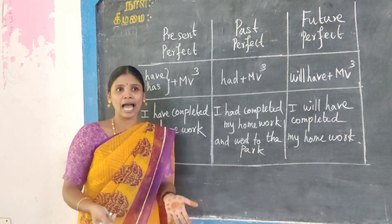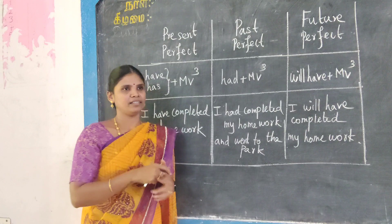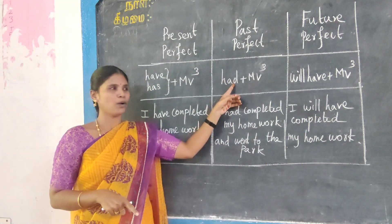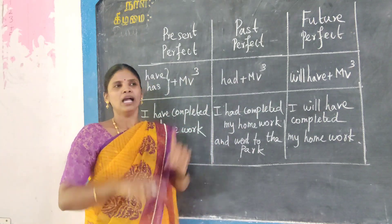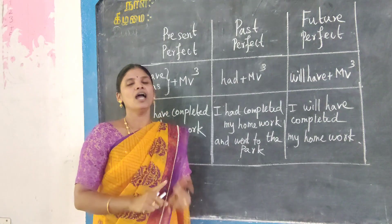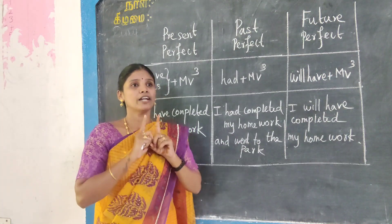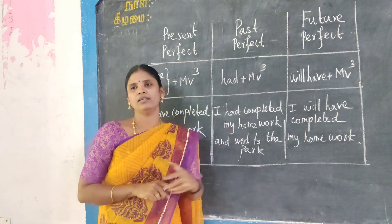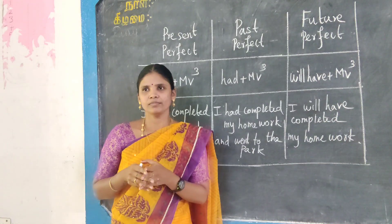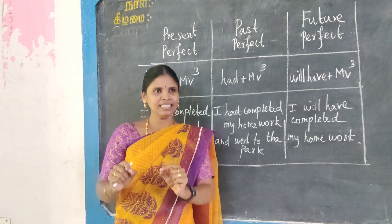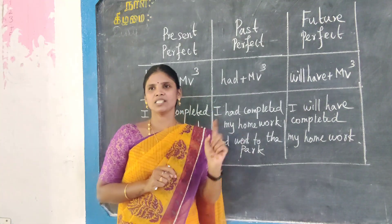For past perfect, had is used for all persons: I had, we had, you had, they had, he had, she had. The main verb should be in that form — past participle. The first form of the verb is present, the second form is past, and the third form is past participle.